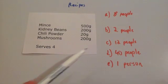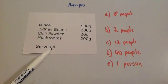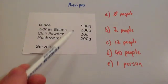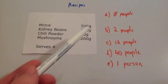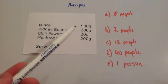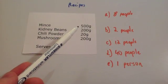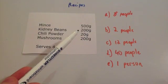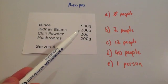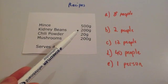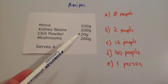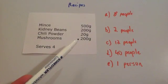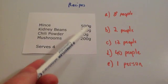What about for 40 people? Well, that's quite nice and easy, because 10 times four is 40. So if you times this by 10, you'll get it for 40 people. So 5,000 grams of mince or 5 kilograms, 2,000 grams of kidney beans — in other words, 2 kilograms — 200 grams of chili powder, and 2,000 grams or 2 kilograms of mushrooms.